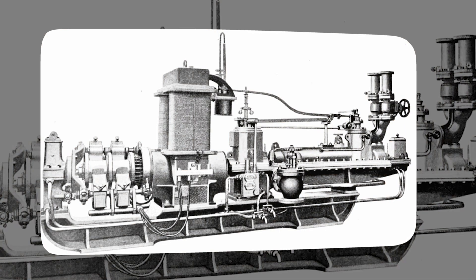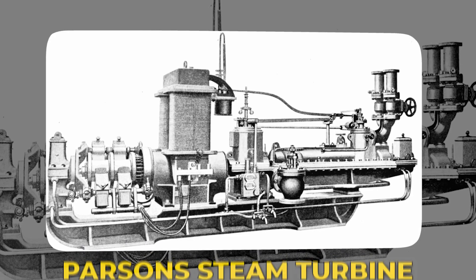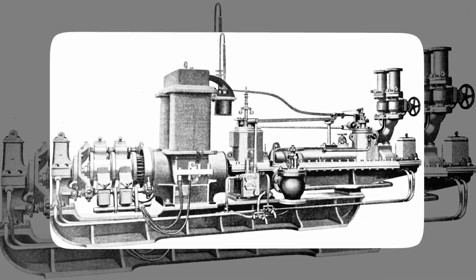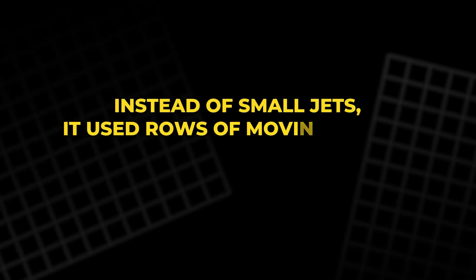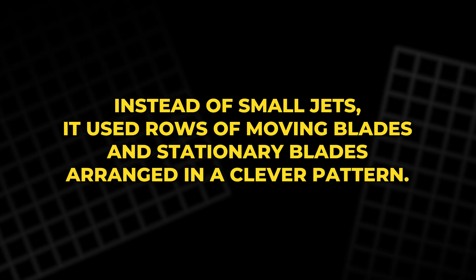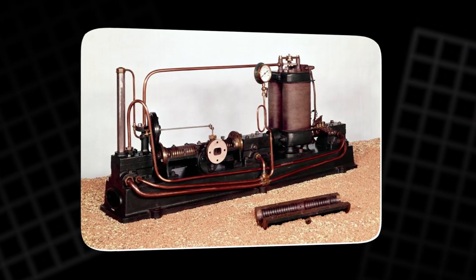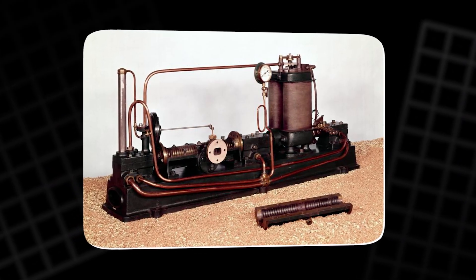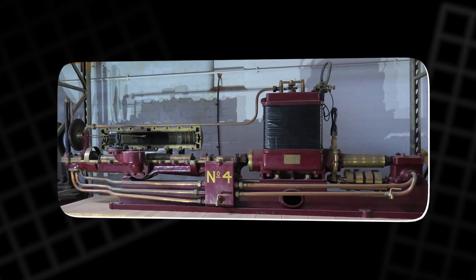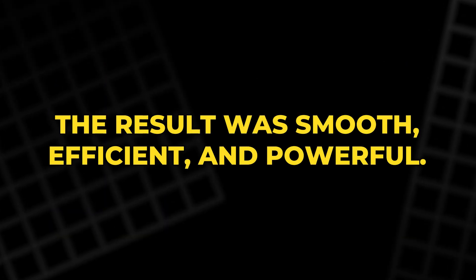Fast forward almost 2,000 years and Sir Charles Algernon Parsons took that simple idea and turned it into something revolutionary. His design, known as the Parsons steam turbine, became the foundation for nearly every modern power plant. Instead of small jets, it used rows of moving blades and stationary blades arranged in a clever pattern. The moving blades took the energy of the steam and the stationary ones redirected it into the next row, gradually transferring the steam's speed and power into the rotating shaft. The result was smooth, efficient, and powerful.